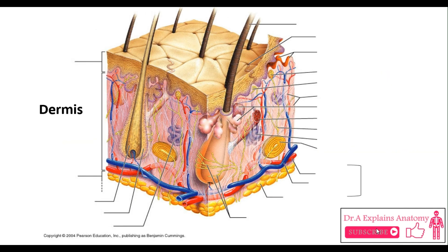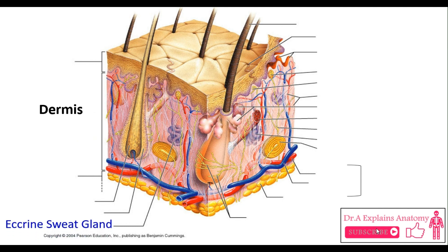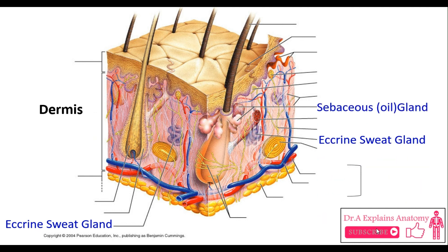Moving to the two types of glands in the dermis. First, we have the eccrine sweat glands. This is a sebaceous oil gland.